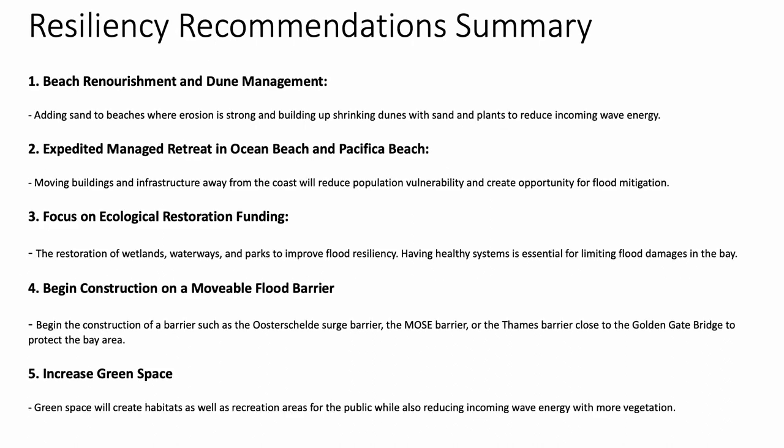The resiliency recommendations: number one is beach renourishment and dune management — relatively easy and inexpensive, though temporary. Number two is expedited managed retreat in Ocean Beach and Pacifica Beach to reduce population vulnerability and create flood mitigation opportunities. Number three is a focus on ecological restoration funding — restoring wetlands, waterways, and parks to improve flood resiliency. Number four is beginning construction on a movable flood barrier, like the MOSE or Thames Barrier, positioned at the Golden Gate Bridge to protect the bay. Number five is increasing green space to create habitats, recreation, and reduce incoming wave energy.